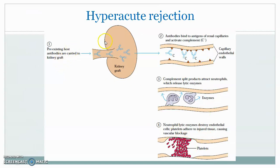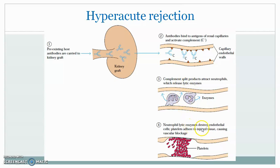In hyperacute rejection, the recipient's pre-existing antibodies migrate to the graft and attach to HLA antigens, activating complement and attracting neutrophils. Neutrophils secrete lytic enzymes, causing an inflammation reaction, and the graft is damaged suddenly within a single day.